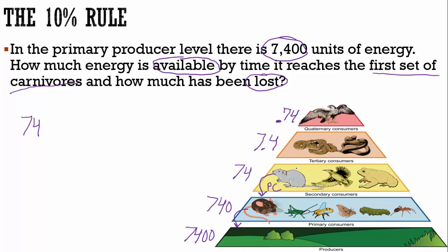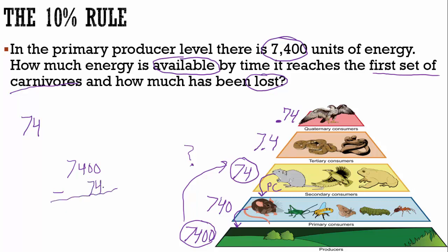How much energy has been lost? We started with 7,400 and wound up with 74. So we take 7,400 minus 74, which gives us 7,326. Checking: 7,326 plus 74 equals 7,400 — correct. So 7,326 units of energy have been lost. If your teacher lets you use a calculator, definitely take the extra seconds to punch it in and get the right answer. This is science, not math — work smarter, not harder.